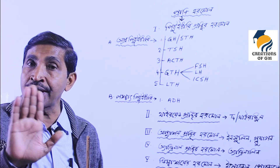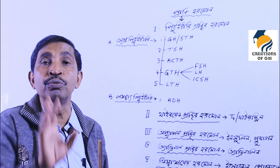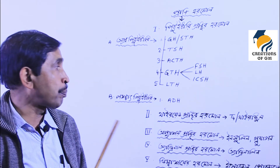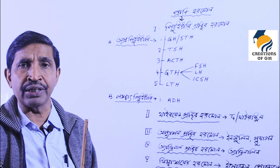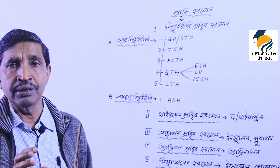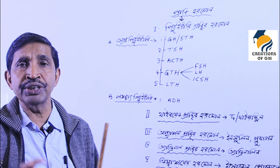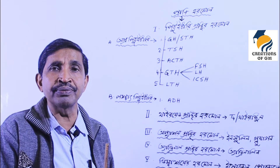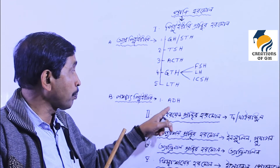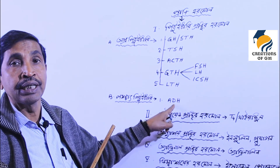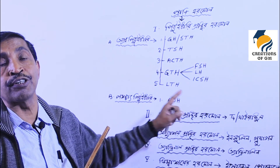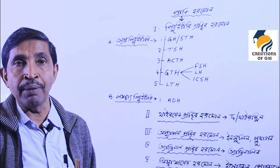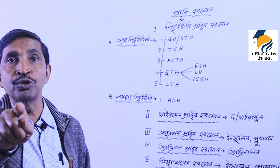If ADH is deficient, large amounts of dilute urine — without sugar — are produced. The other posterior pituitary hormone is oxytocin, which acts on smooth muscles and has special importance during childbirth. ADH is also called anti-diuretic hormone, and it regulates kidney tubule reabsorption.